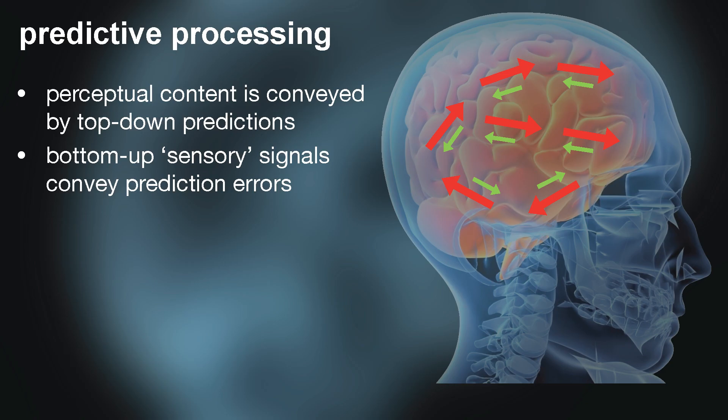Predictive processing is a theory about how the brain actually reaches these best guesses — how it takes ambiguous sensory data and converts it into a definite perception. The idea is that perceptual content is conveyed not by reading out sensory signals, but by the collective top-down predictions that are anticipating the ongoing sensory flow. The bottom-up sensory signals that come into the brain through the eyes, the ears, and all our senses convey prediction errors that simply report the difference between what the brain expects and what it gets at every stage of processing. So whereas we normally think of perception as readout from the outside in, this perspective says it's the other way around — what we perceive is coming from the inside out, and sensory signals mainly calibrate our ongoing perceptual best guesses by minimizing prediction errors.